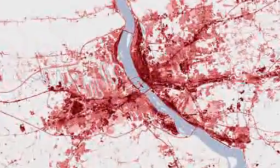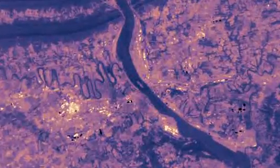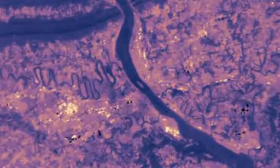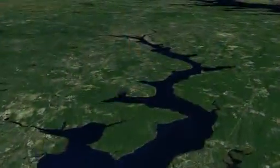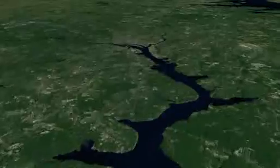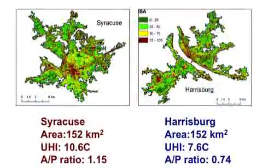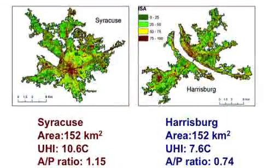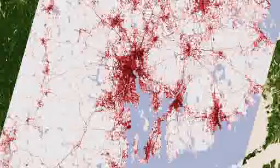We find that the urban heat island is affected by several factors. The first factor is the surrounding ecological context, and then the size of the city — meaning both the area of the city and the population size. And then there is the shape of the city and also the development patterns of the city.